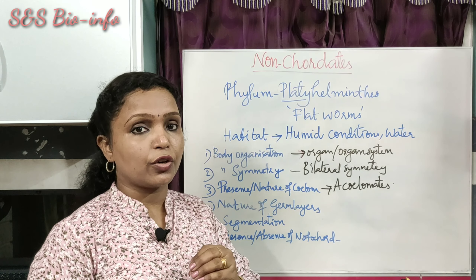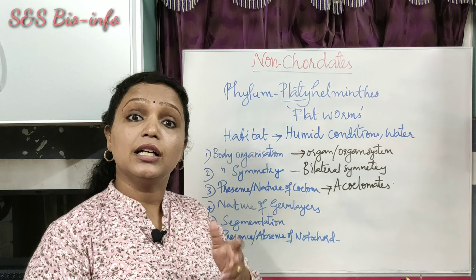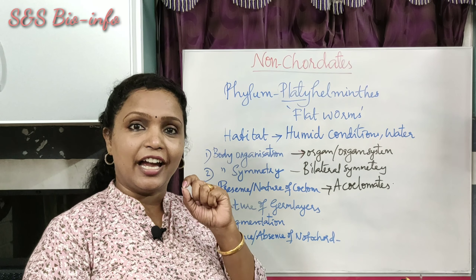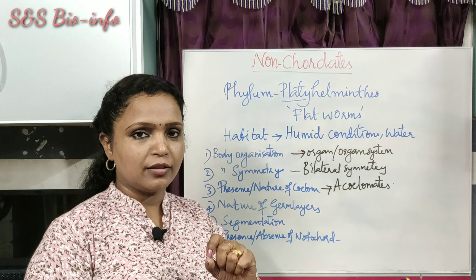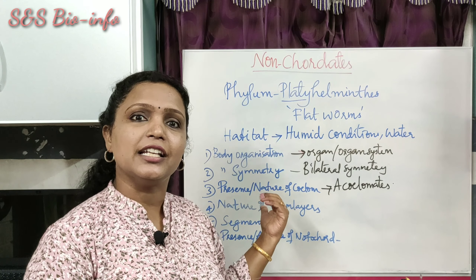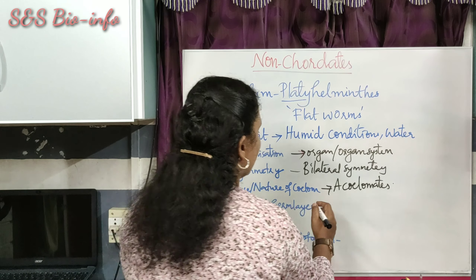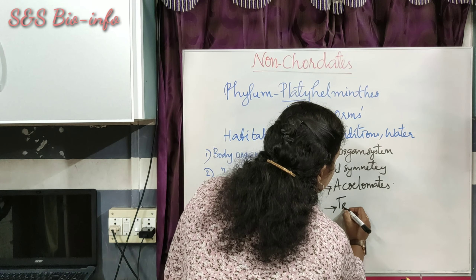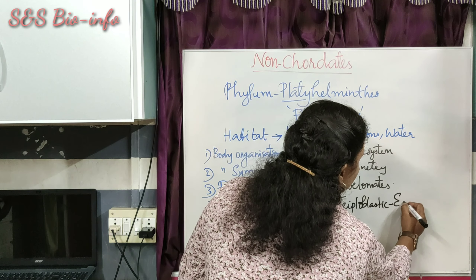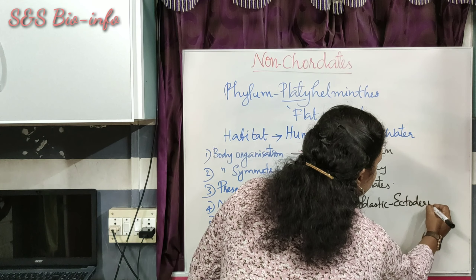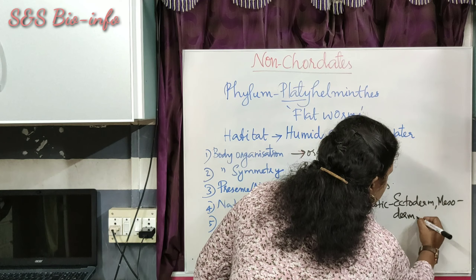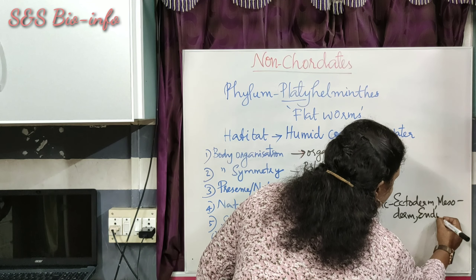The nature of germ layers: germ layers are the three layers formed during the embryonic stage — ectoderm, mesoderm, and endoderm. These three layers are present in Platyhelminthes during their embryonic stage, so they are triploblastic animals.